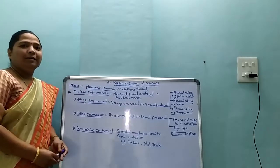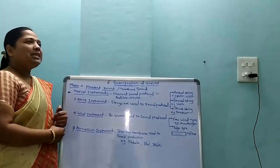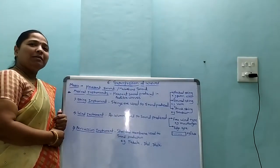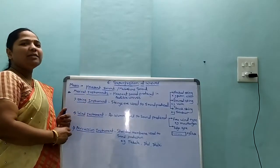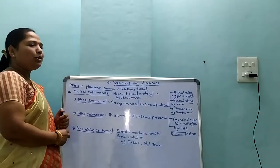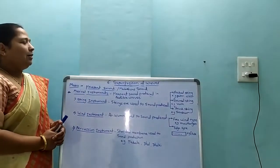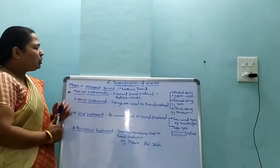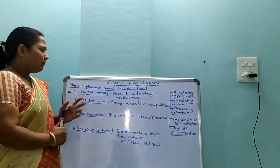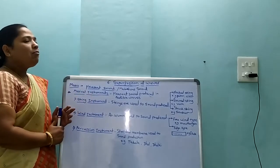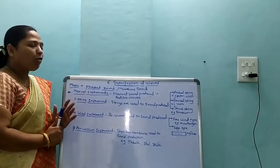Hello students, we will learn about what is meant by music and how pleasant or melodious sounds are produced by musical instruments. Musical instruments produce audible, pleasant sounds from vibrating strings or vibrating air columns.